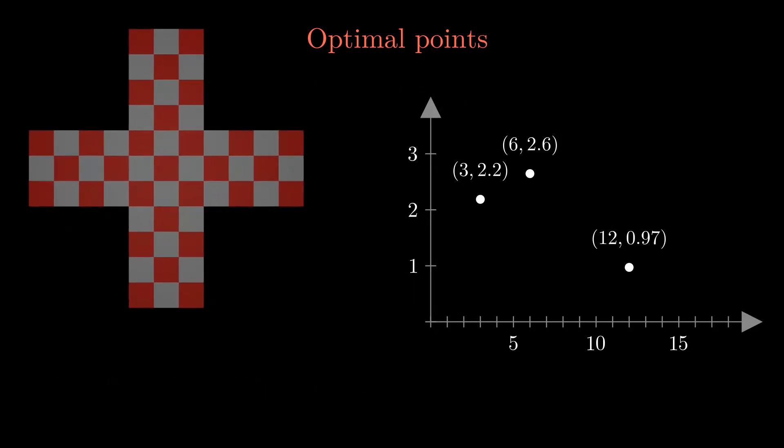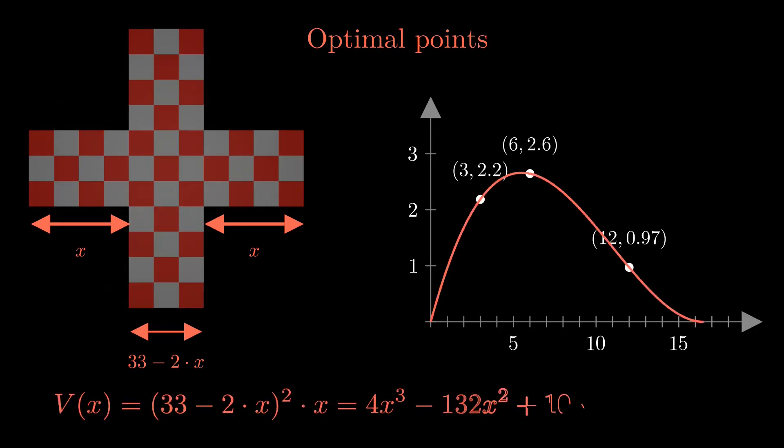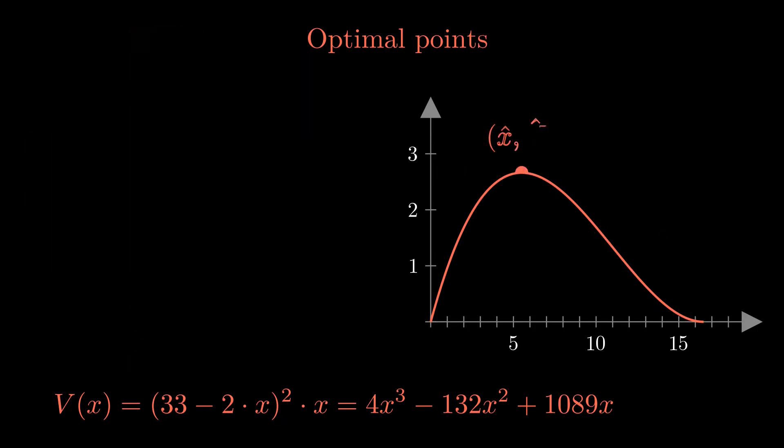To do so, the volume of the box has to be expressed for arbitrary corner pieces of size x. The value x determines the height of the box and it has to be removed twice from 33 to get the length of the bottom square. The graph of this function is also shown in the plot.